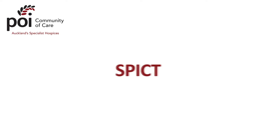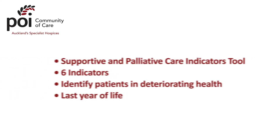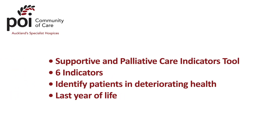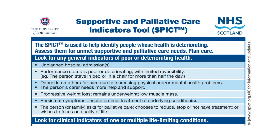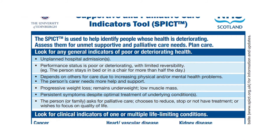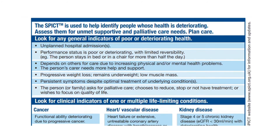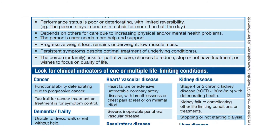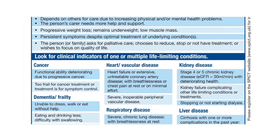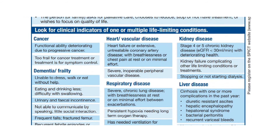SPICT — the Supportive and Palliative Care Indicators Tool. It is useful to help identify those of your patients with deteriorating health who may be in their last year of life. This tool has a list of 6 general indicators of poor or deteriorating health and then some disease-specific indicators. This is a one-off screening tool.